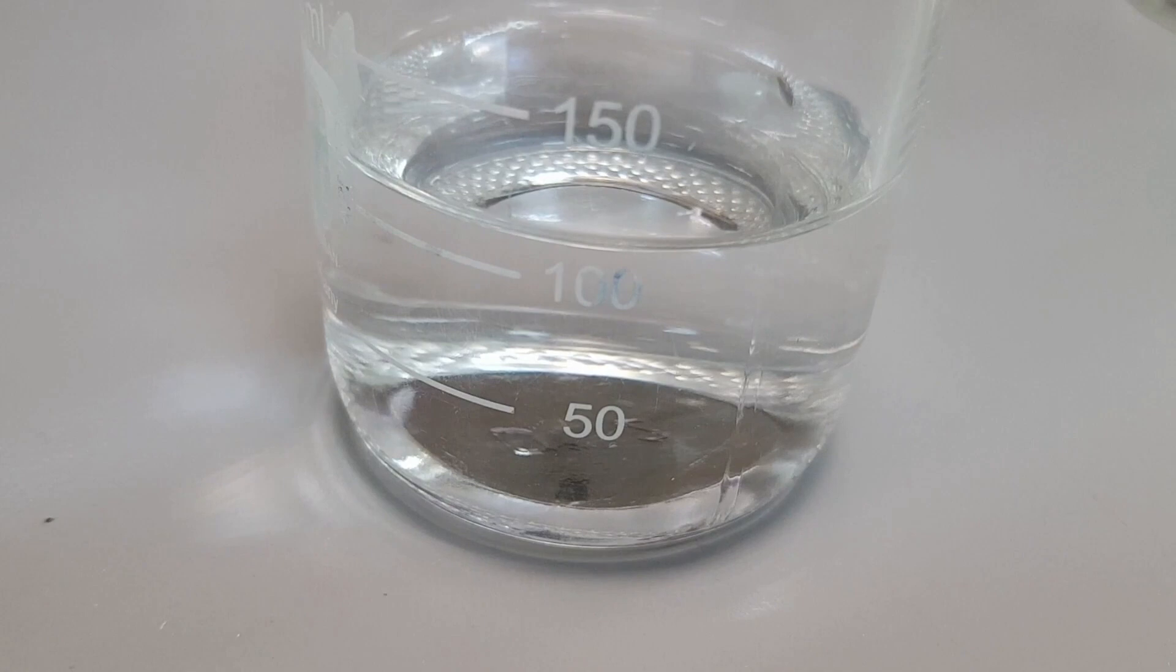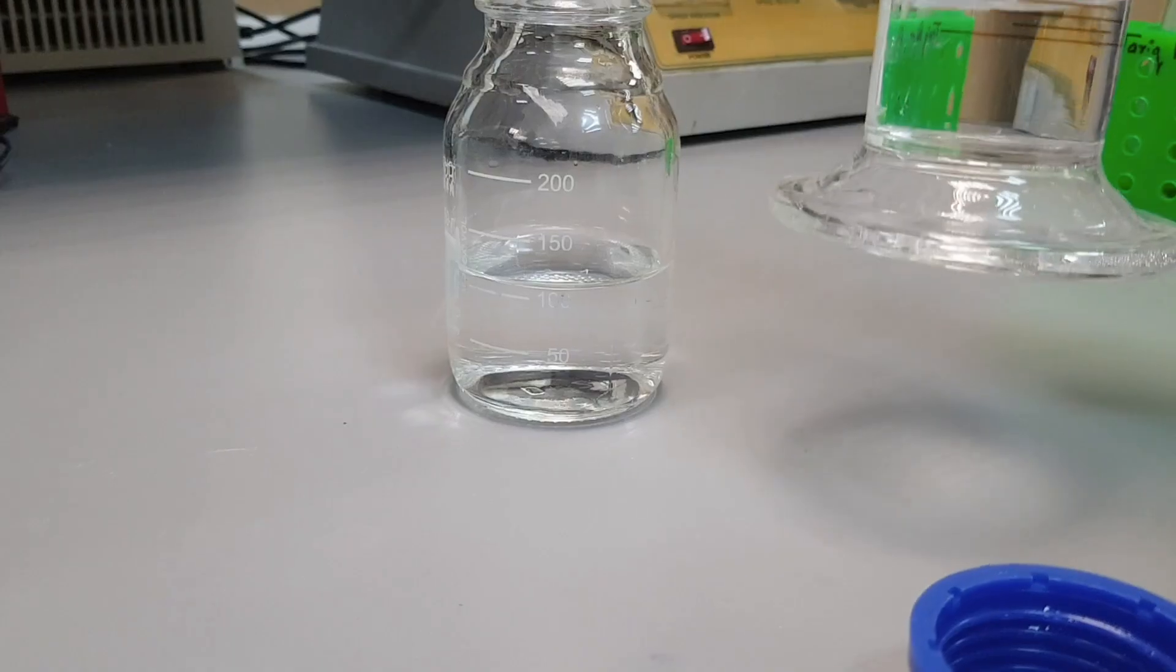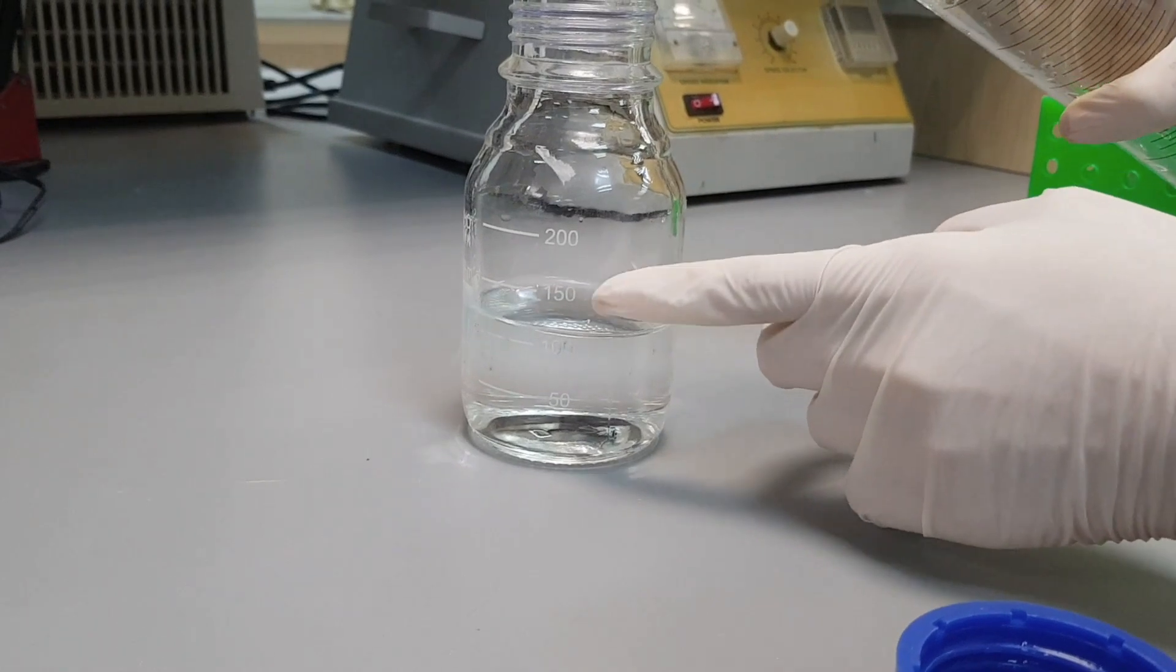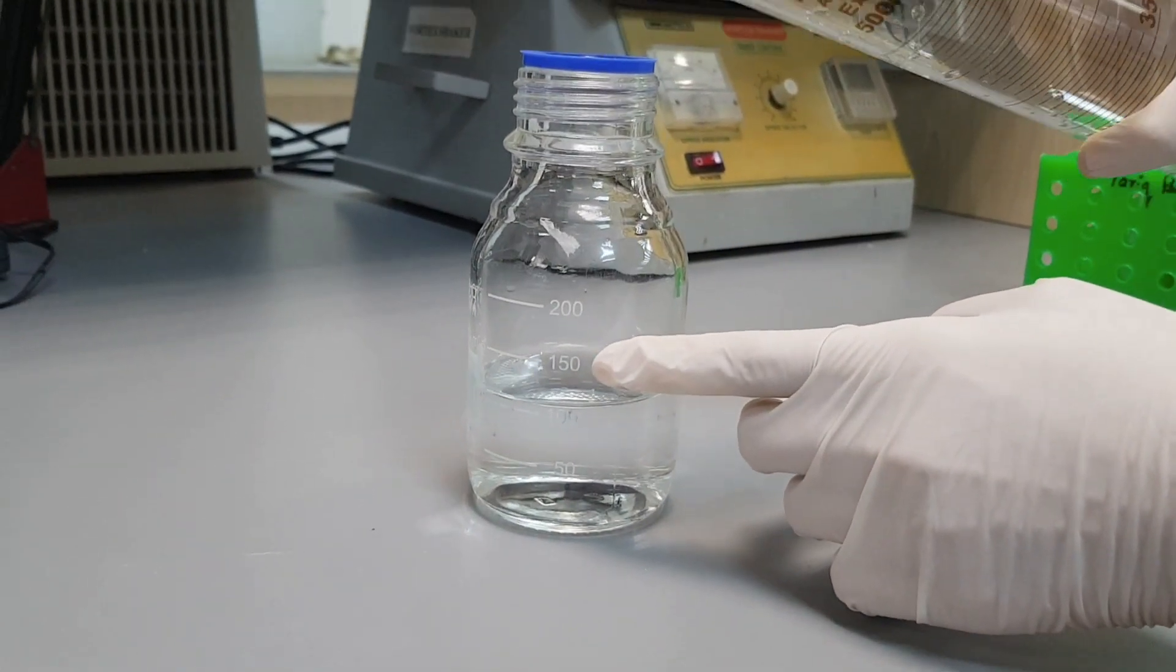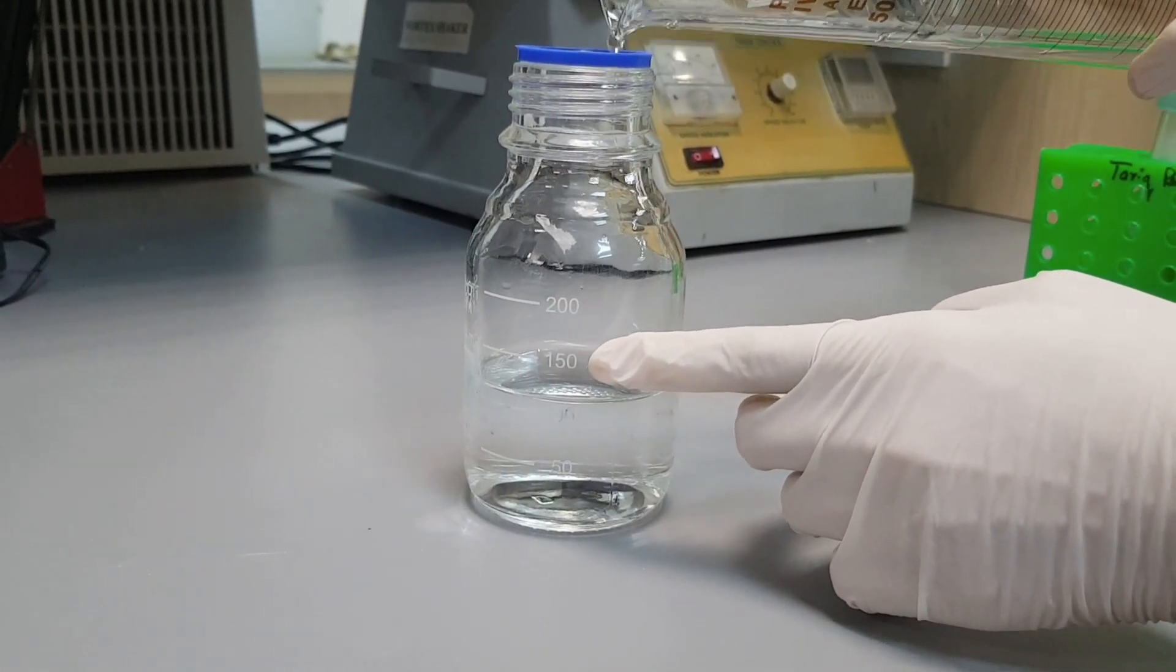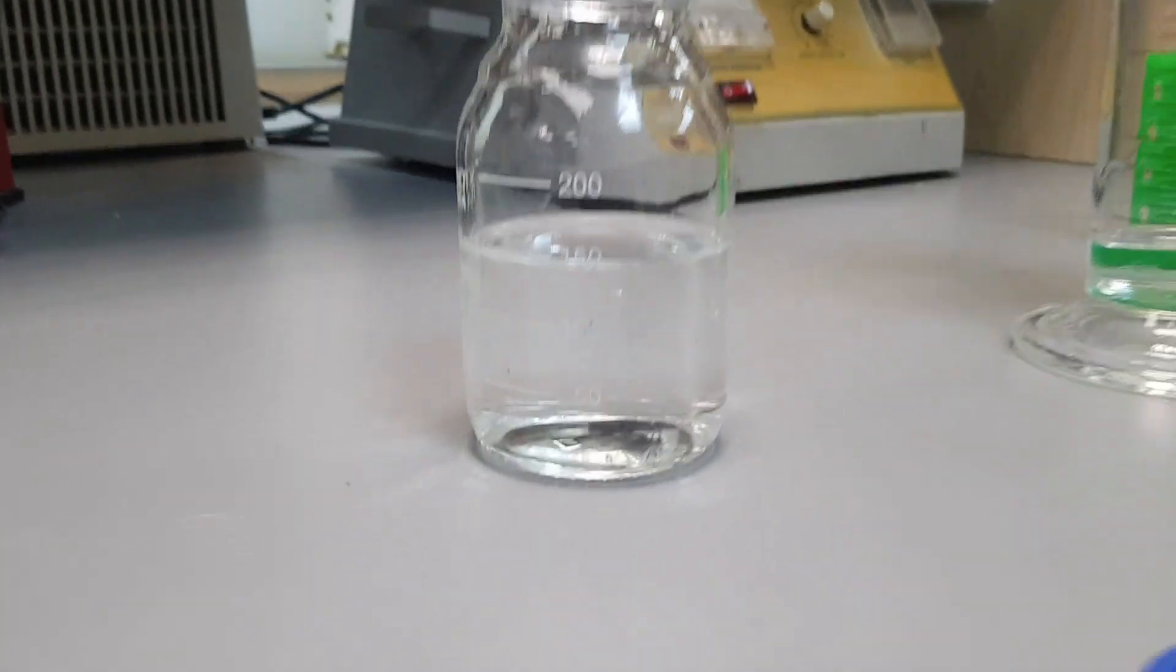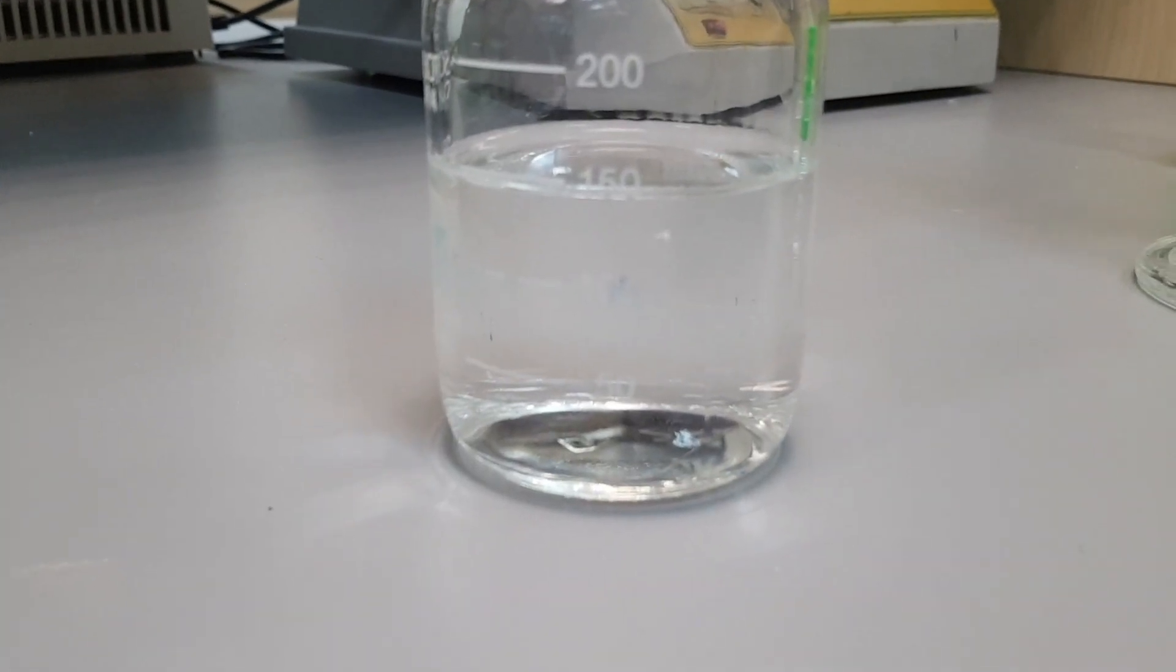Mix the reagents well by gentle shaking until all the ingredients are well dissolved and look transparent. Now check the pH of this solution by using a pH meter and maintain its pH at 7.5 to 7.6. Once the pH is maintained, make the final volume of this solution to 150 ml.